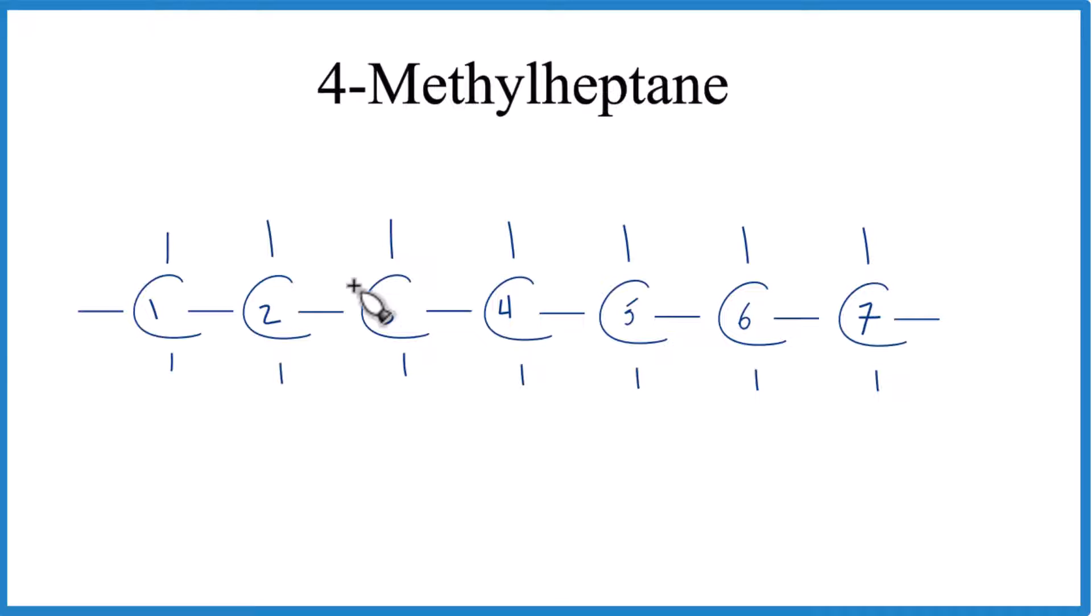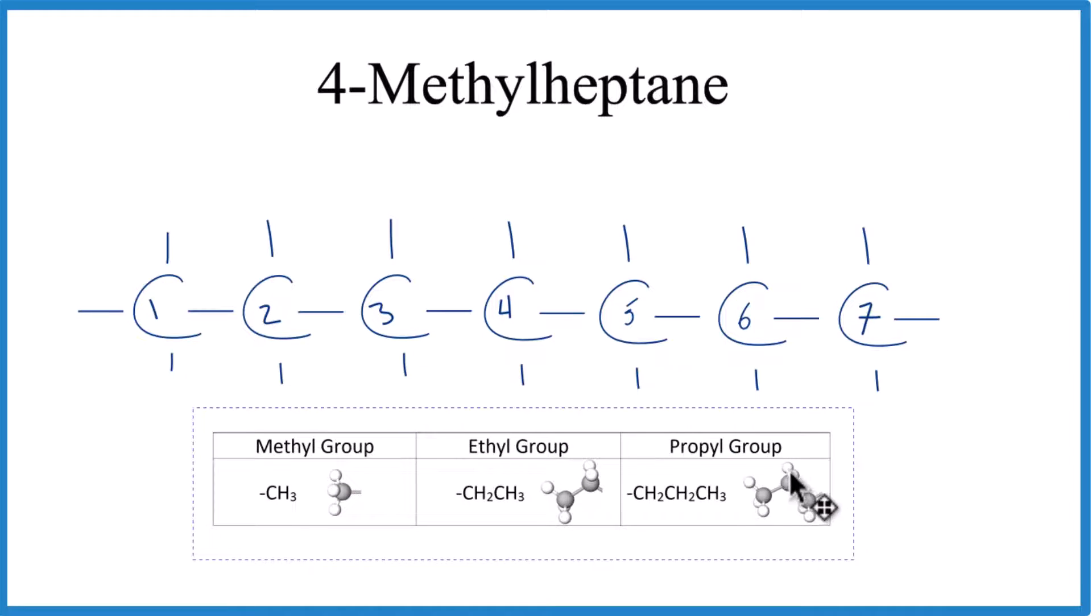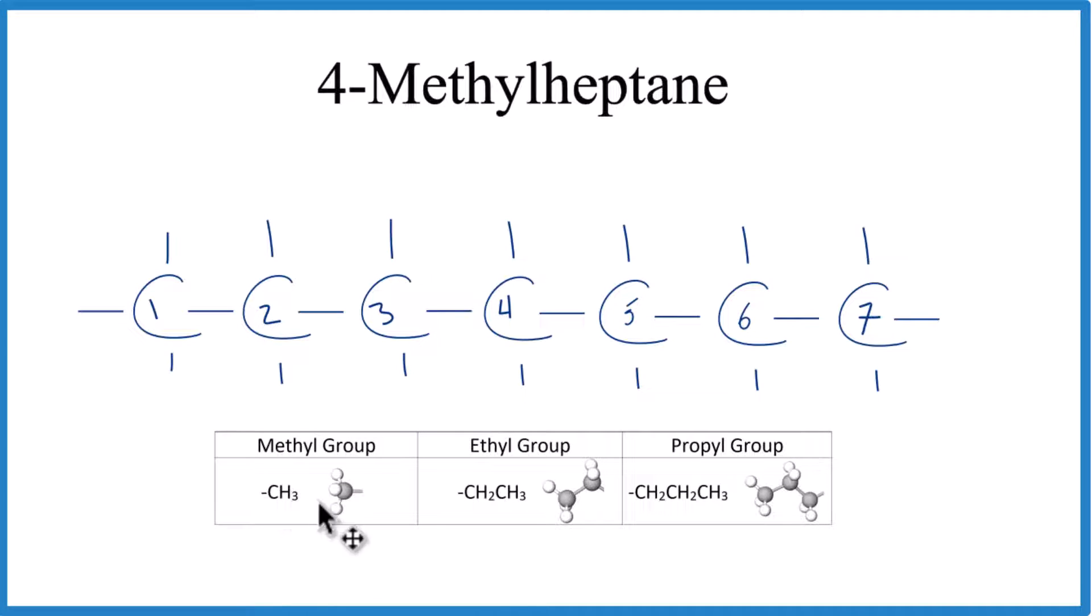For the 4-methyl, that means on the fourth carbon right here, we're going to stick a methyl group. A methyl group is just CH3. We'll put that right here on the fourth carbon, and we'll have our 4-methylheptane.